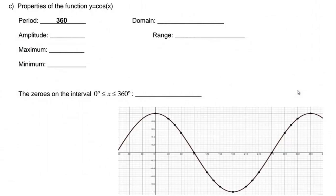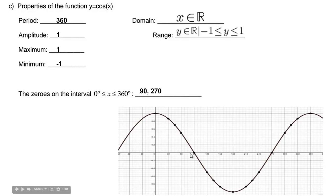The period is actually the same, it's 360. So the length of a full cycle from max to max is 360. The amplitude is 1, the maximum is 1, the minimum is negative 1. The domain is all real numbers, the range is the same. And the zeros are slightly different, 90 and 270. So that's what makes cosine 0.